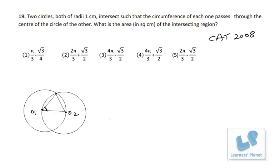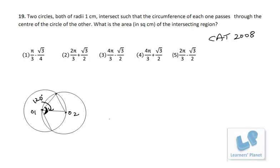Since it is an equilateral triangle, this angle must be 60 degrees. Drawing the corresponding line on the other side gives the same situation: if this angle is 60 degrees, this angle must also be 60 degrees, so the combined angle at the center must be 120 degrees.